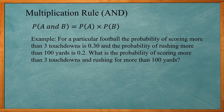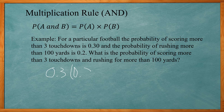The multiplication rule uses AND. The probability of A and B is equal to the probability of A times the probability of B. For example, for a particular football game, the probability of scoring more than three touchdowns is 0.3 and the probability of rushing more than 100 yards is 0.2. The probability of both happening is 0.3 times 0.2, which gives you 0.06.